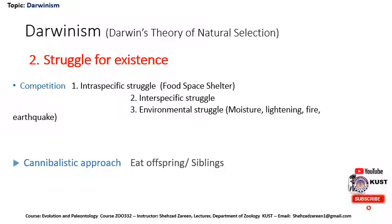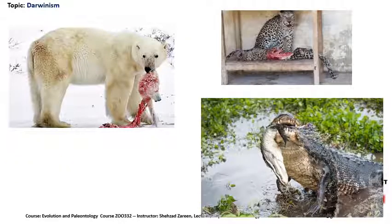There is another phenomenon called cannibalism. Cannibalism is a phenomenon in which an organism eats its own offspring or sibling. These pictures are showing cannibalism — here a polar bear, a cheetah, and a crocodile are eating members of their own species.